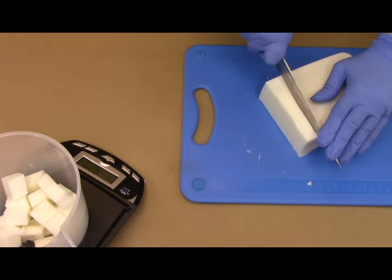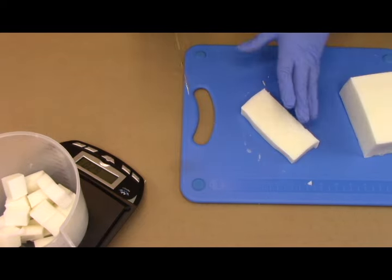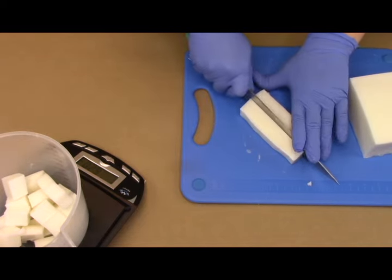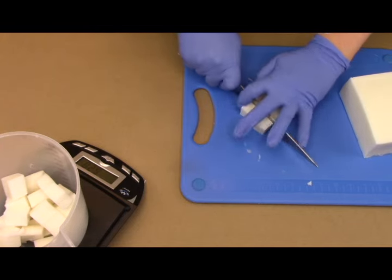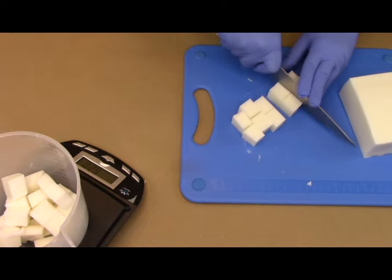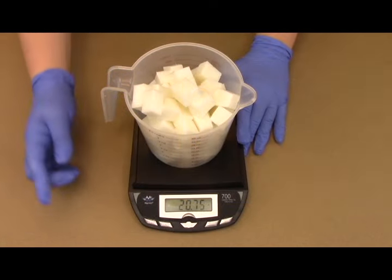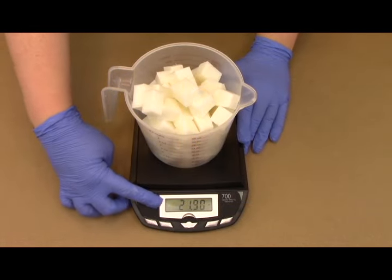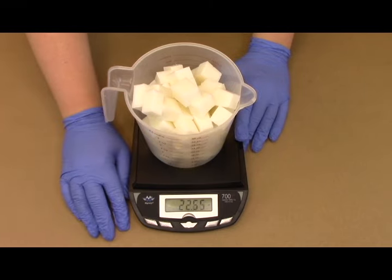So I wouldn't recommend doing like huge chunks otherwise you're going to have to put it in the microwave for a long time and it'll take a while. But I'm just going to do this until I have about 20 ounces of the soap base measured out in the microwave safe container. Okay, so as you can see I'm right at 20 ounces on the dot which is pretty much exactly what I'm going to need to fill this silicone mold.